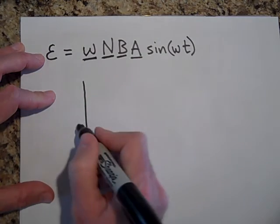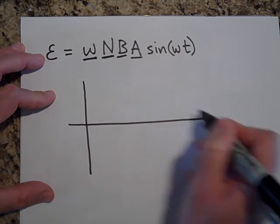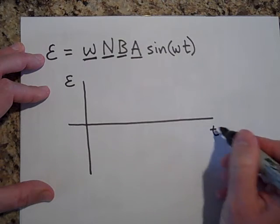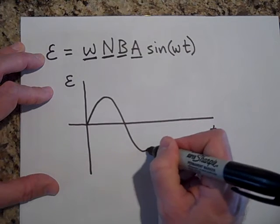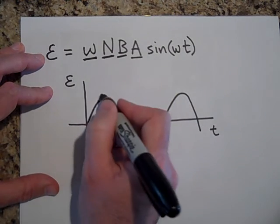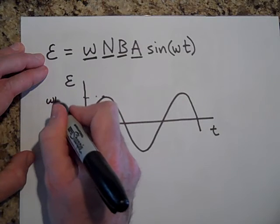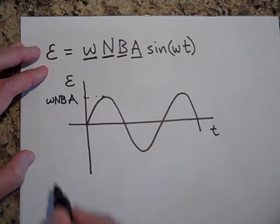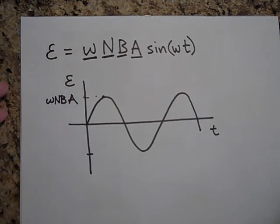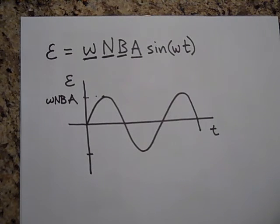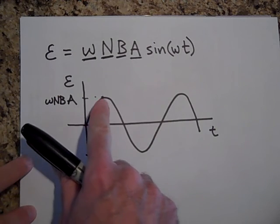But if you notice, if I were to plot EMF versus time, it's a sine wave. And so it's going to be going something like this. And its maximum is going to be at WNBA, that will be its maximum. And its minimum will be negative WNBA. That's if I'm turning with a constant omega. So you're not generating constant power, but there are ways to make it a little bit more constant than this.